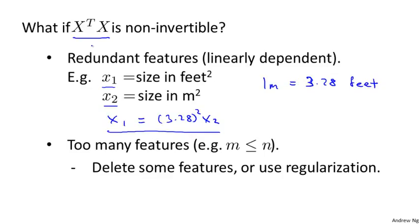The second thing that can cause X transpose X to be non-invertible is if you're trying to run a learning algorithm with a lot of features. Concretely, if m is less than or equal to n. For example, if you imagine that you have m equals 10 training examples, but you have n equals 100 features, then you're trying to fit a parameter vector theta, which is n plus one dimensional. So it's 101 dimensional.